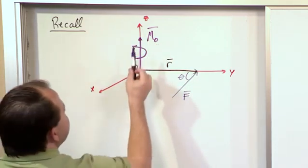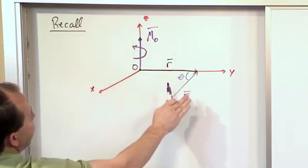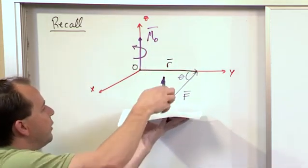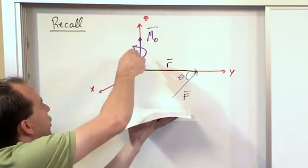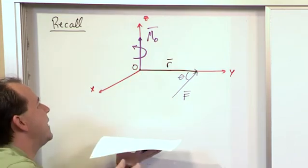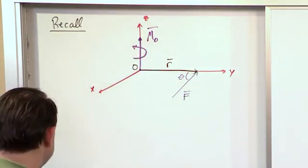The actual moment vector is oriented perpendicular to the plane that contains these two vectors. The r vector and the F vector are in this plane. The moment comes out of the page like that, and I've drawn an arrow to signify the rotation.